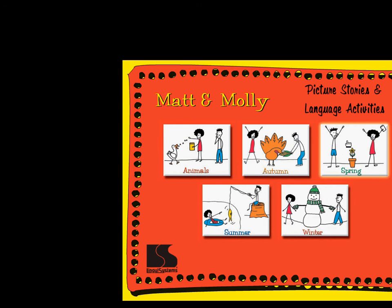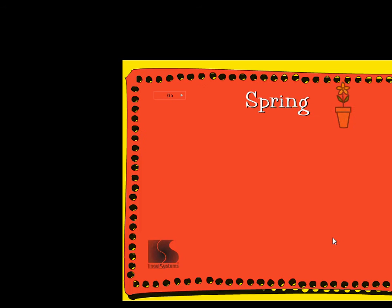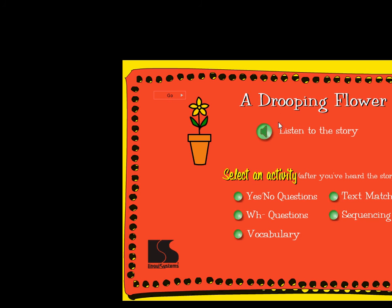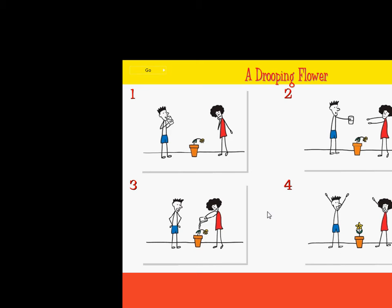What kind of stories would you like to hear? Click on a theme. Spring. Pick a spring story. Here we go! A drooping flower. Click on the big button to listen to the story. Click on one of the small buttons to do an activity. Let's go! This story is called A Drooping Flower. It has four parts. Click on the arrow to listen to the story.